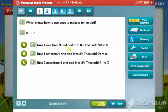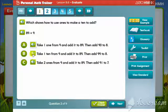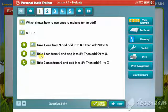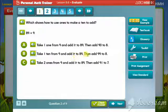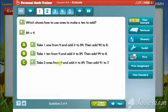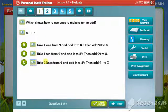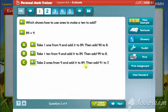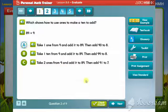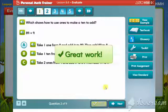Take 1 one from 9 and add it to 89. Then add 90 to 8. Take 1 ten from 9 and add it to 89. Then add 99 to 8. Take 2 ones from 9 and add it to 89. Then add 91 to 7. Great work!